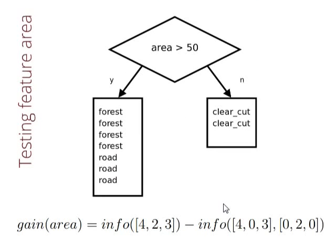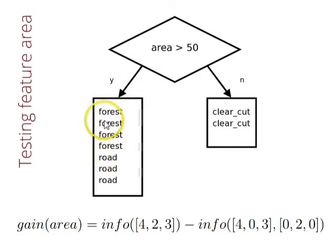Now let's test the feature area. Suppose we find a threshold of 50. When we use this feature, the left branch contains all elements of Forest and all of Road, and the right branch contains all elements of Clear Cut. Visually, we can see that this test is better than the previous one, and let's verify whether the gain is also higher.